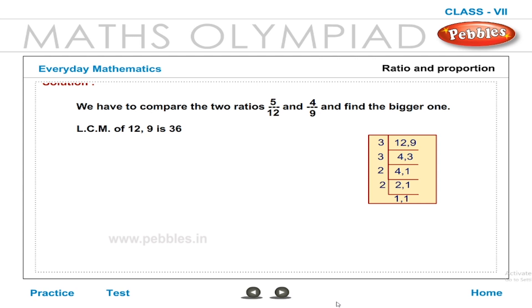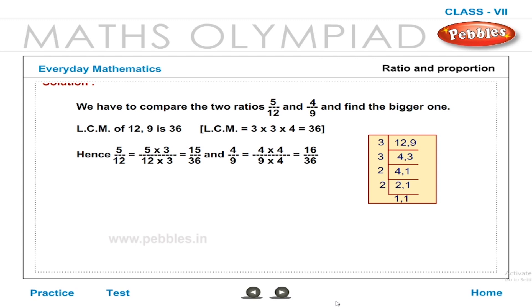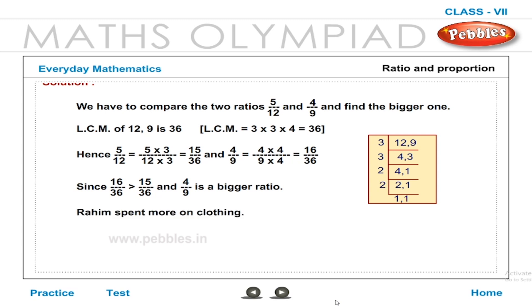First, find the LCM of 12 and 9. LCM = 3 × 3 × 4 = 36. Hence, 5/12 = (5 × 3)/(12 × 3) = 15/36, and 4/9 = (4 × 4)/(9 × 4) = 16/36. Since 16/36 > 15/36, the ratio 4/9 is bigger. So, Rahim spent more on clothing.